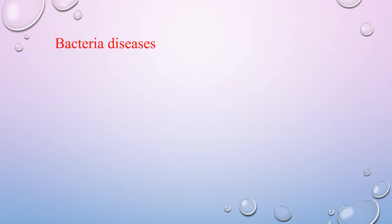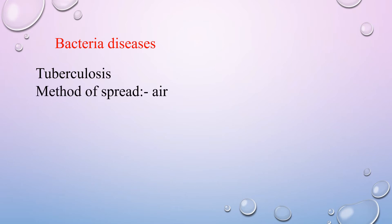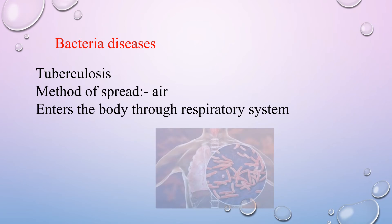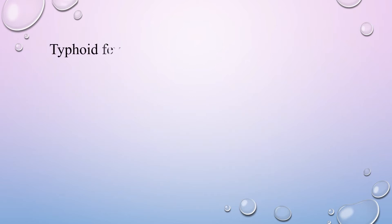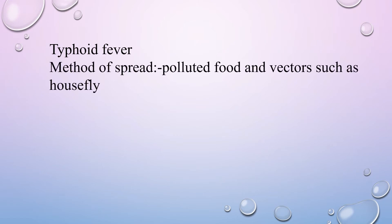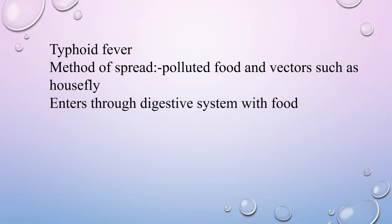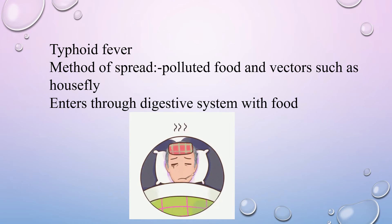Now let's learn about bacterial diseases. The first is tuberculosis, which spreads through air and enters the body through the respiratory system. Symptoms include weight loss, tiredness, loss of appetite, and high temperature. The next bacterial disease is typhoid fever, which spreads through polluted food and vectors such as the housefly. It enters through the digestive system with food and presents as a kind of fever.